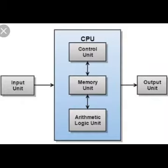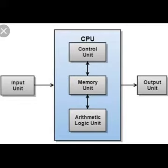Next we are going to see the functions of CPU. It takes data as an input, stores the data and instructions in its memory unit and uses them as required, processes the data and converts it into useful information, and generates the output. For example, taking 2 and 3 as input, storing the numbers in memory unit, some processing is done by the CPU in the ALU — Arithmetic Logic Unit — and the output is delivered as 2 plus 3 equals 5.